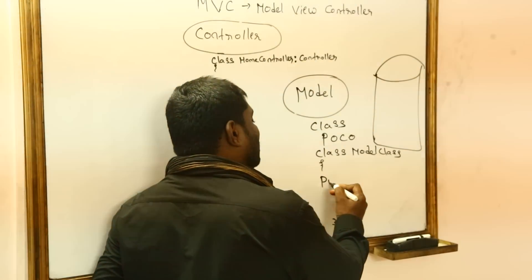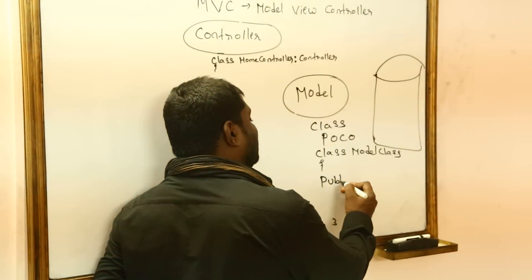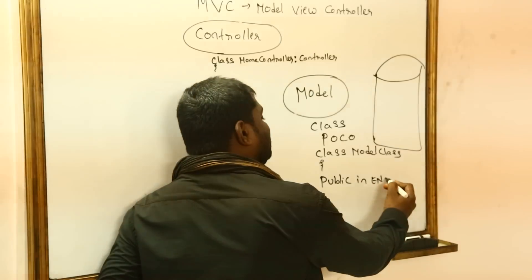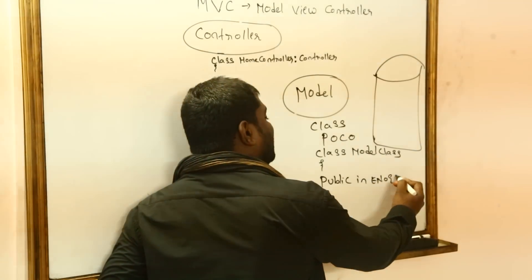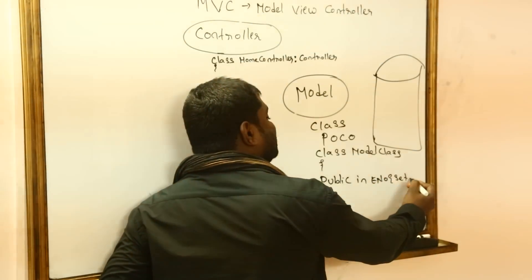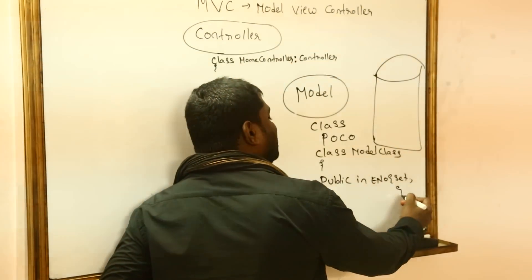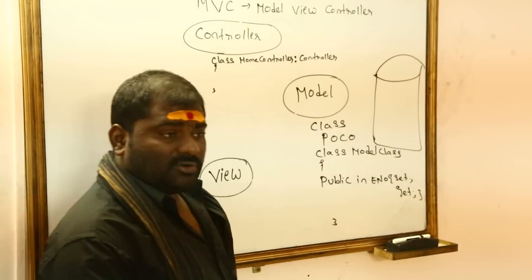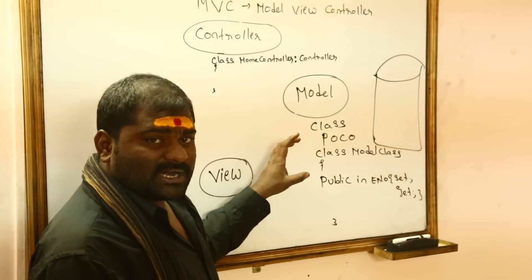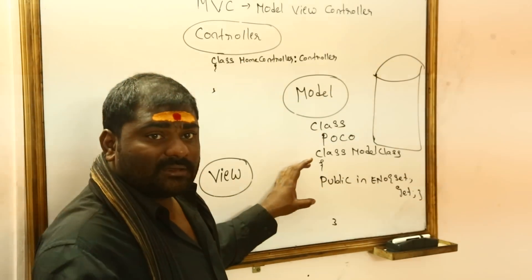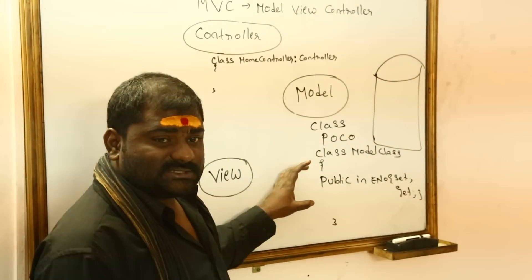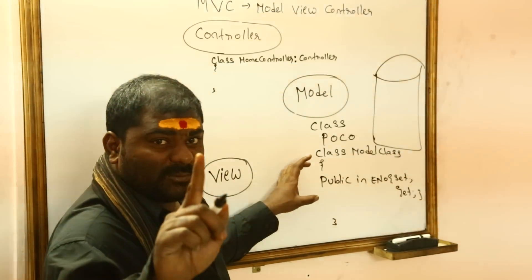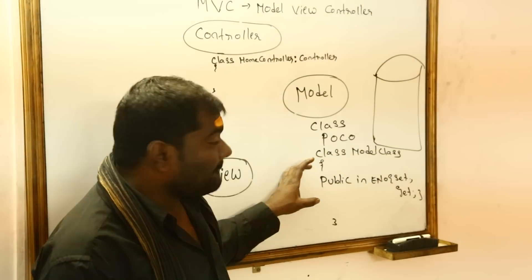For example, I will declare one automatic property: public int ENumber { get; set; }. The model class consists of only automatic properties.